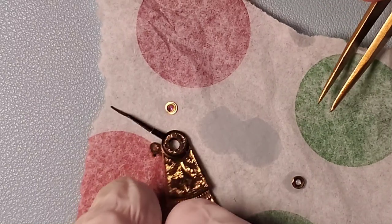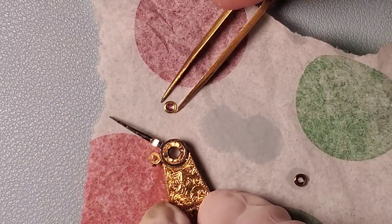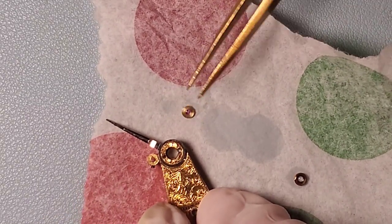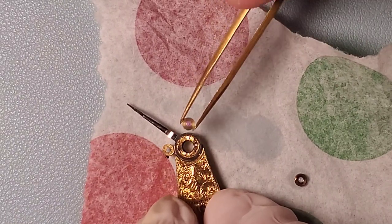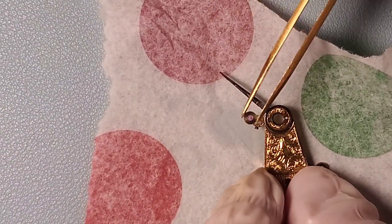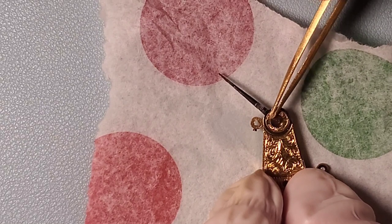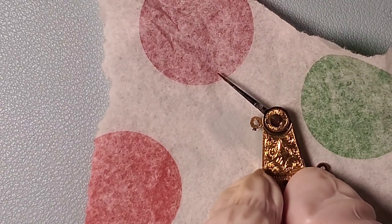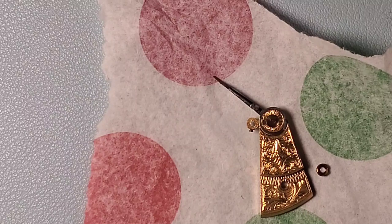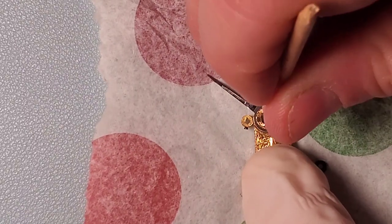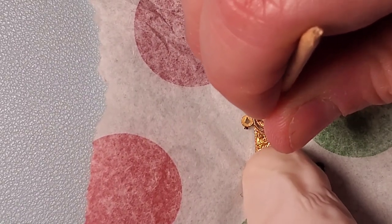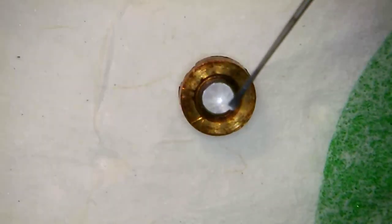I'm going to go ahead and place the hole jewel back into the balance cock. Since the oil is applied to the cap jewel I can put this one in first and I just set it into place and press it in again using the pegwood freshly sharpened.